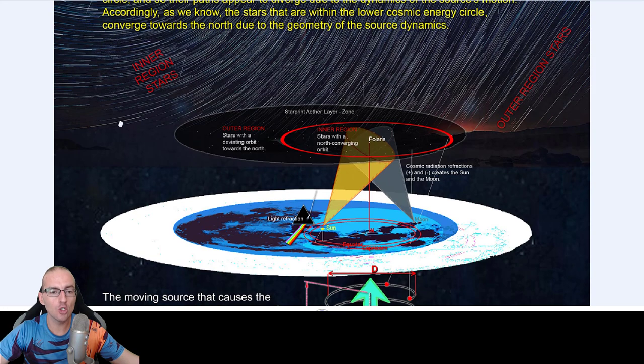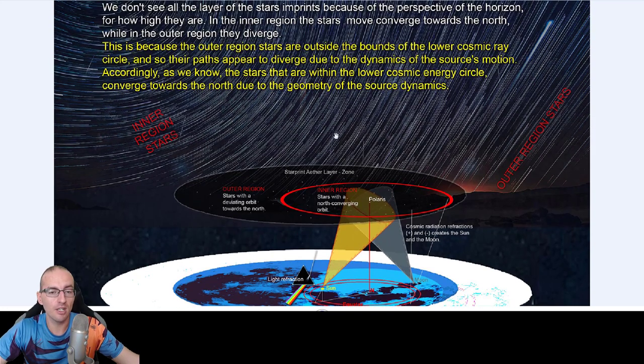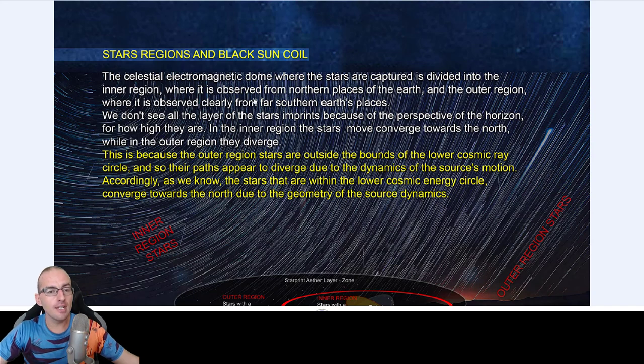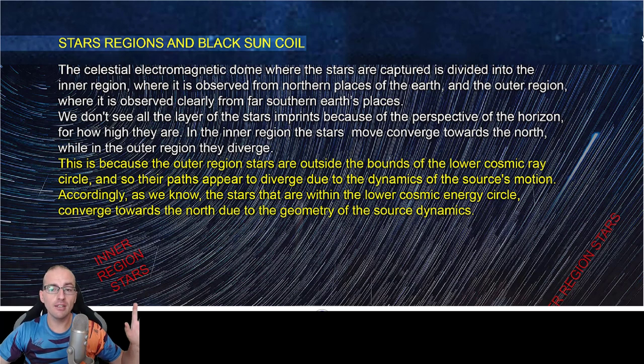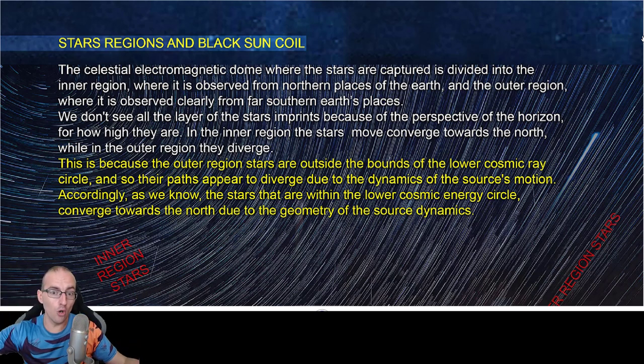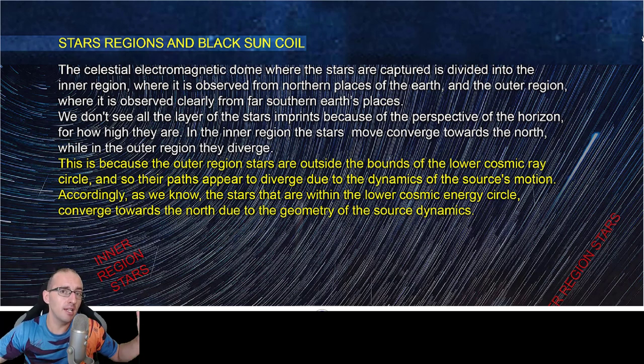Remember this schematic here is so super awesome if you had a book and just sit down and read. The celestial electromagnetic dome where the stars are captured is divided into the inner region where it is observed from northern place of the earth, even though north doesn't exist, but so you understand what I'm talking about. The inner region observed from the northern countries in the world and the outer region, which is where it is observed clearly from the far southern earth's places like South America, Australia, and South Africa.